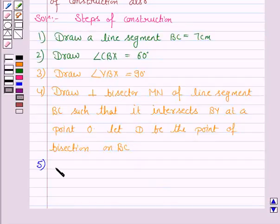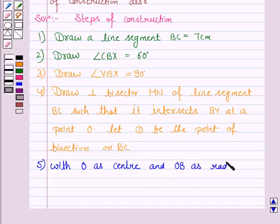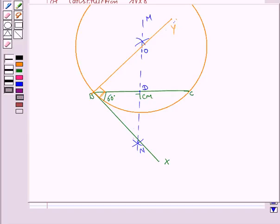Now, the fifth step is with O as center and OB as radius draw a circle. So, we have drawn a circle with center O and OB as radius.